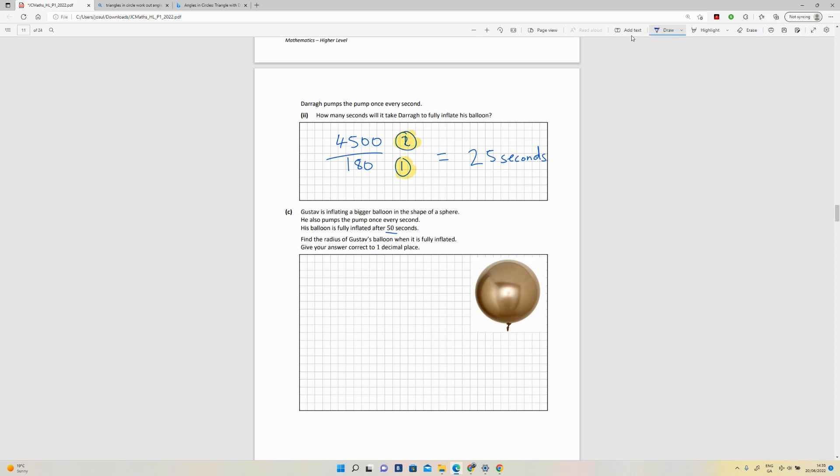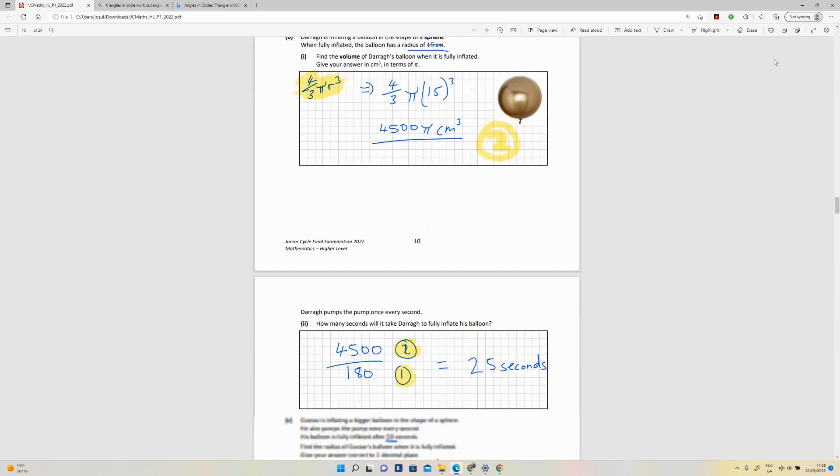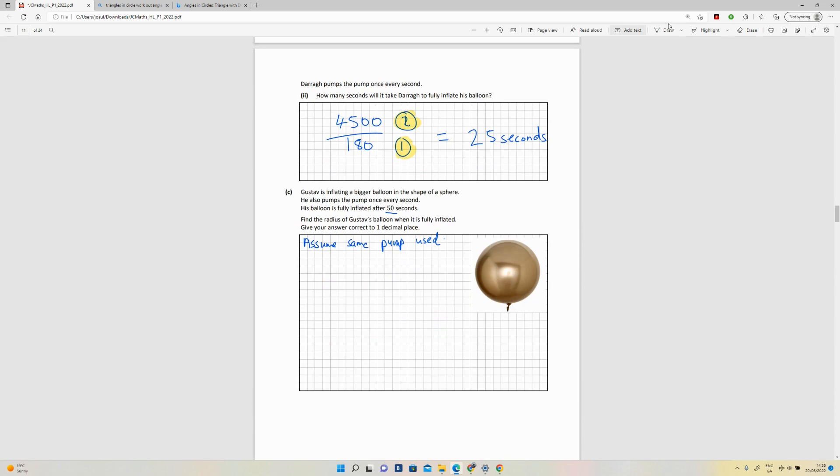So we're going to assume—I'm just going to write it down—assume same pump used. That means the pump is going to have the same amount of volume as the one above, so that's 180π. I'm going to create an equation: 180π centimeters cubed multiplied by 50 seconds is how much volume this balloon is going to have. So that is 9000π.